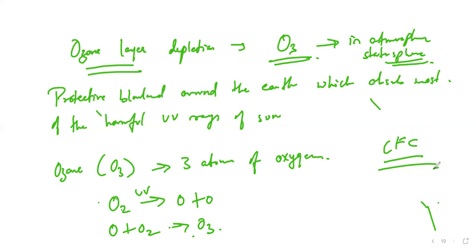There are different other causes also like vehicle pollution and greenhouse effect, but the major thing is the CFC — this is the main cause of ozone depletion. The depletion of the ozone layer also leads to the melting of glaciers and other natural effects we hear about nowadays. CFCs are present mostly in refrigerators, ACs, fire extinguishers, and aerosol sprays.